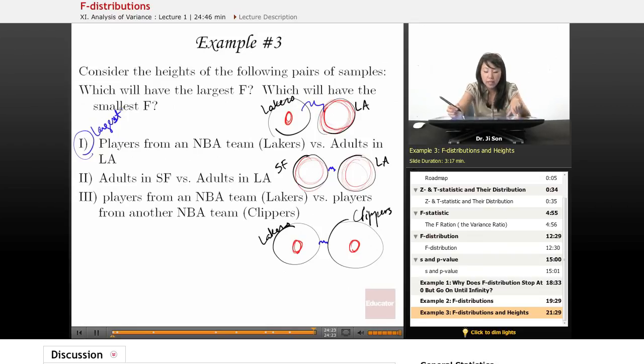Well, which will have the smallest F? I would say the smallest F would probably go with this one, because not only does it have a small numerator, but it has an extremely large denominator. So I would say this one would definitely have the smallest F.